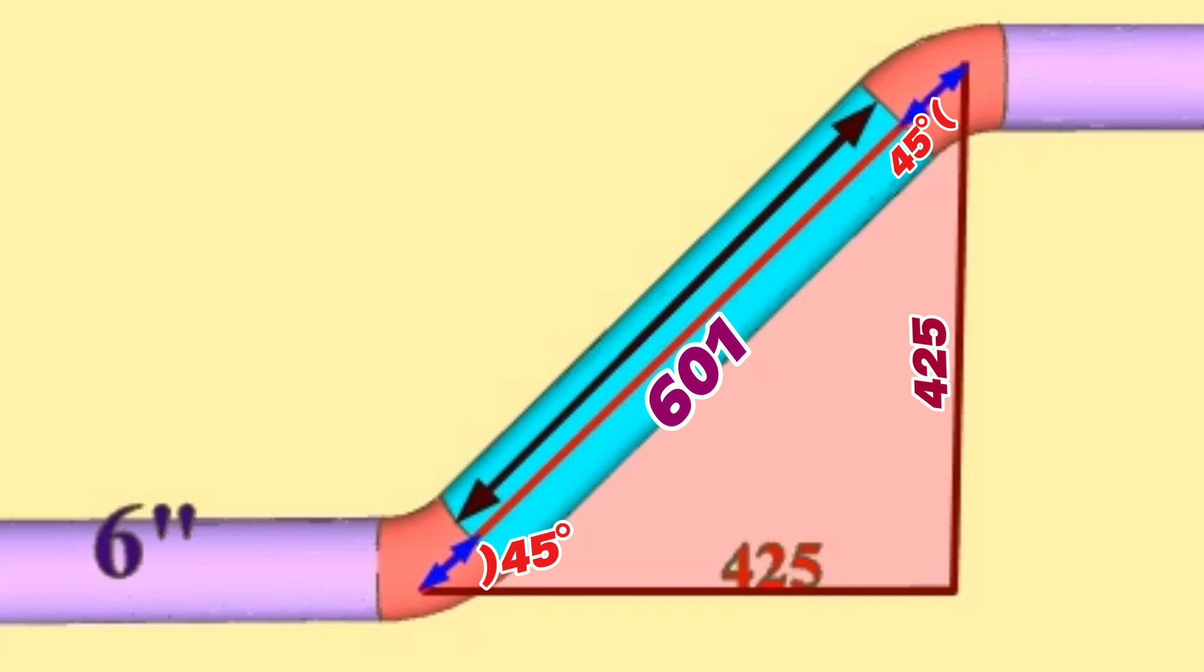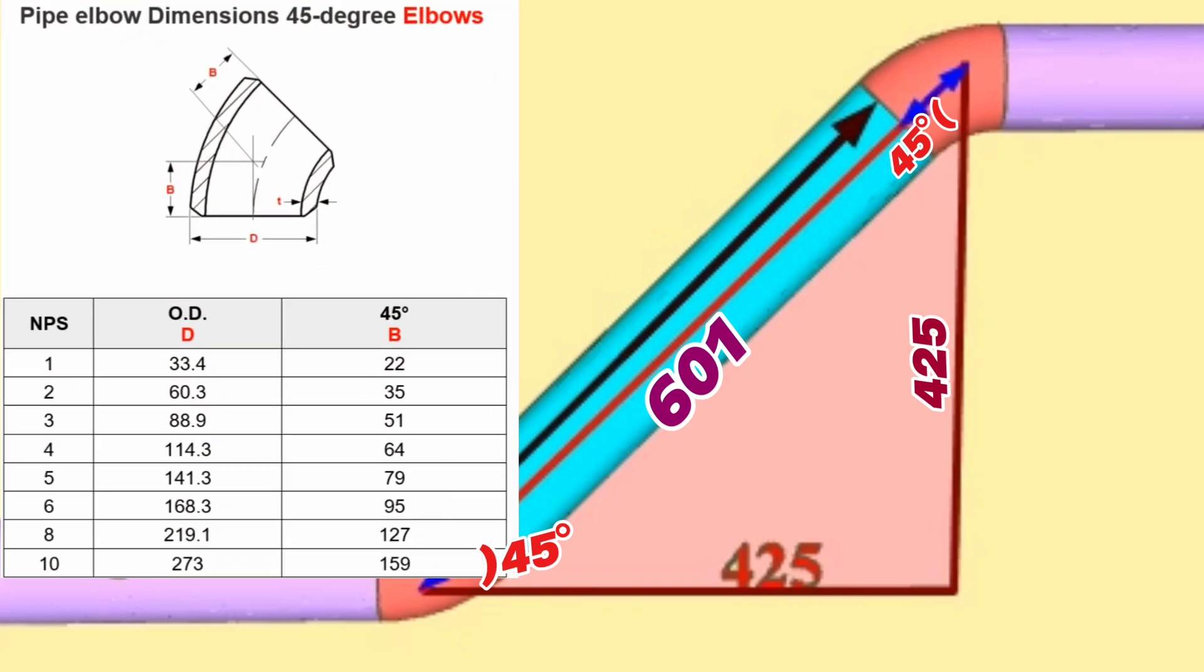Pipe elbow dimensions are covered in ASME B16.9. This table shows 45-degree elbow sizes for nominal pipe sizes from 1 to 10. The nominal pipe sizes (NPS) of 45-degree elbows are shown in the first column of this table. This letter D written on the 45-degree elbow indicates the outside diameter of the elbow and is shown in this column.